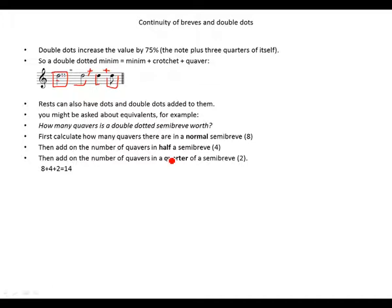First, calculate how many quavers there are in a normal semibreve. So in a normal semibreve, we have eight quavers. Then add on the number of quavers in half a semibreve, which is four, and then in a quarter of a semibreve, which is two.